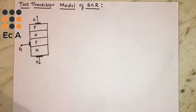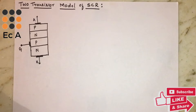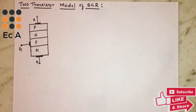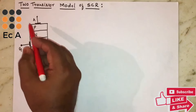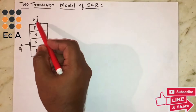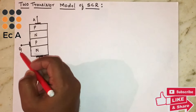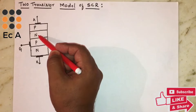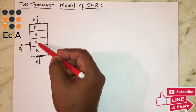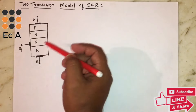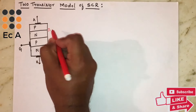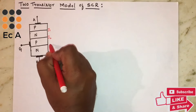Hello friends, welcome to EC Academy. In this lecture we'll understand the two-transistor model of an SCR. We know that SCR consists of three terminals: anode, cathode, and a gate, and it consists of four layers — P, N, P, N. It also consists of three junctions: J1, J2, and J3.